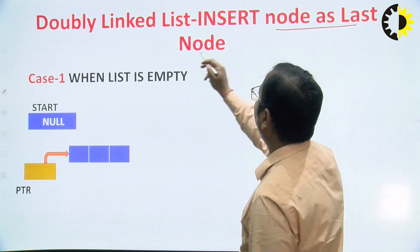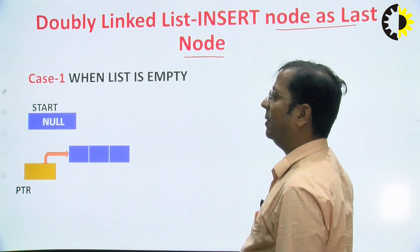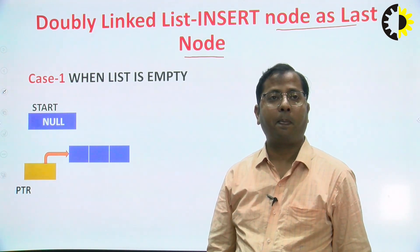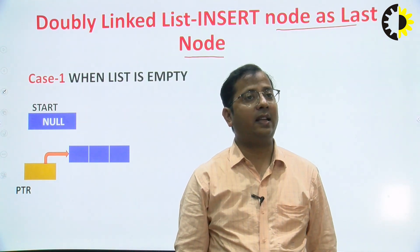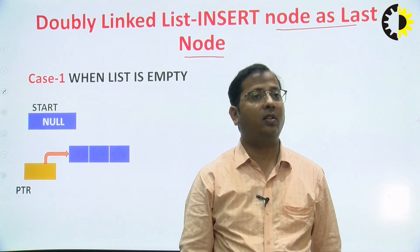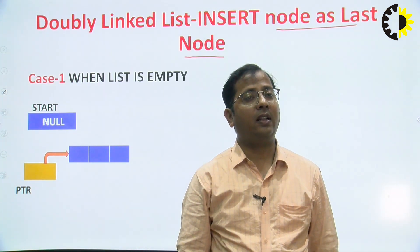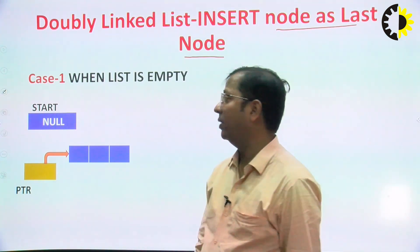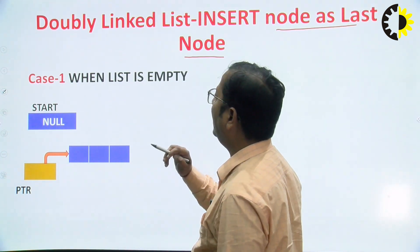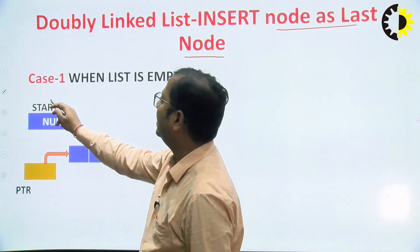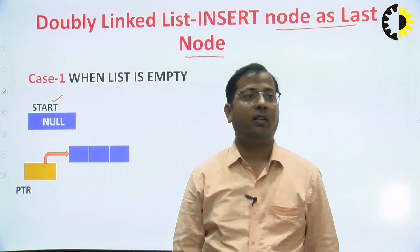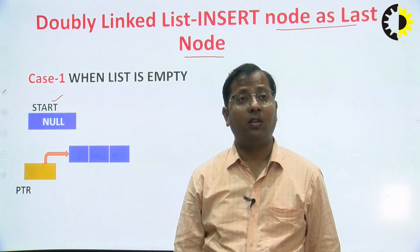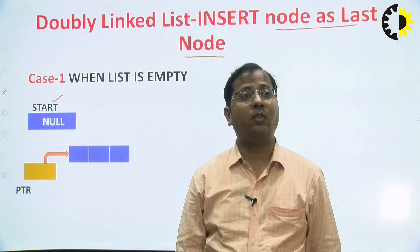Now, insert a node as a last node. We need to insert the node as the last node. We need to check both cases: when the list is empty and when the list is not empty. When the list is empty, start contains null, and since the node is both first and last, we simply call insert node as a first node.